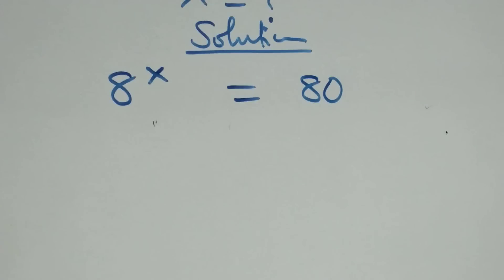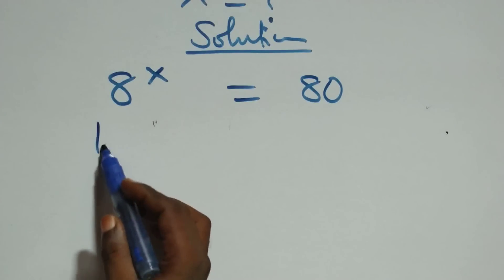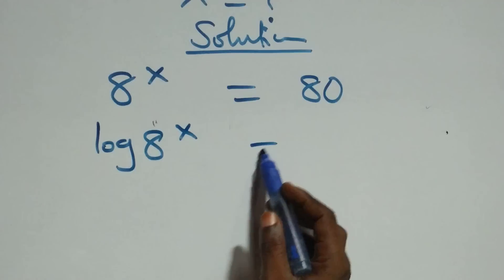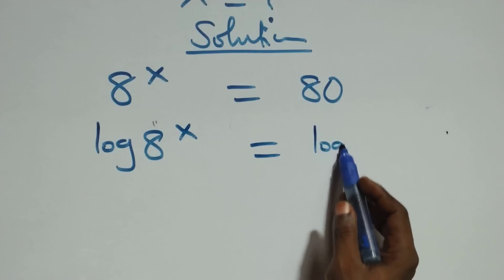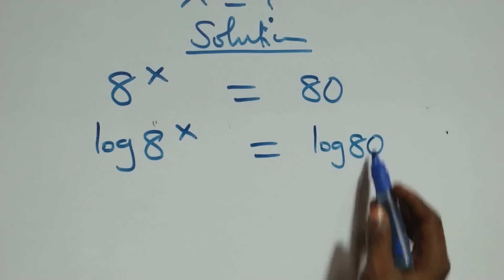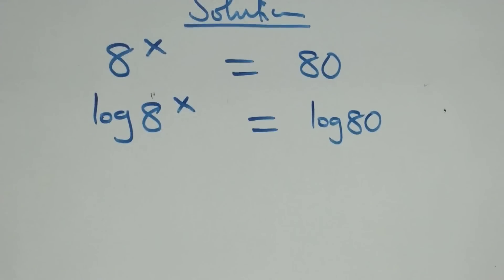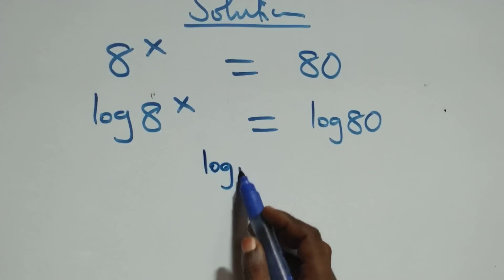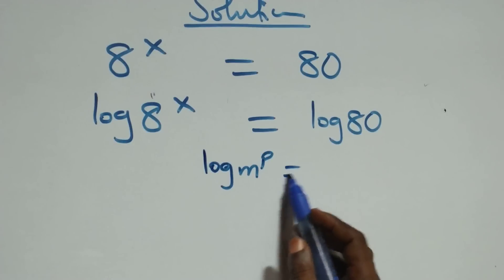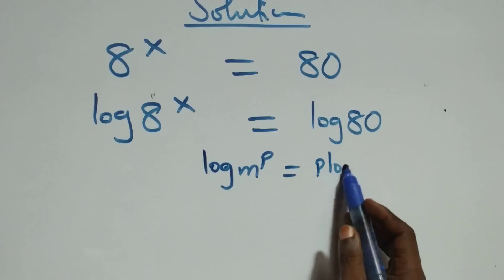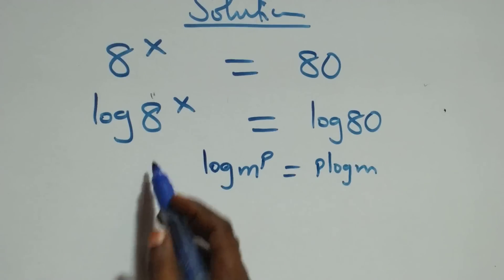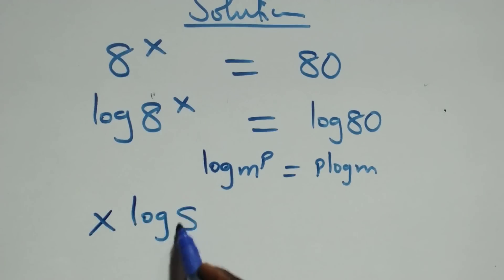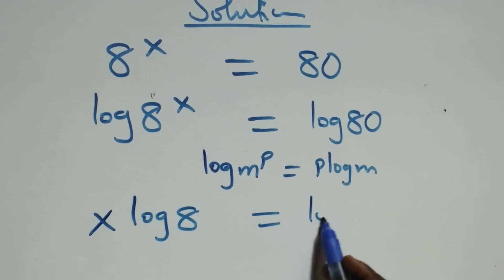We take the log on both sides: log of 8 raised to power x equals log 80. Then we apply the power law of logarithms — log m raised to power p is the same as p·log m — so this becomes x·log 8 equals log 80.